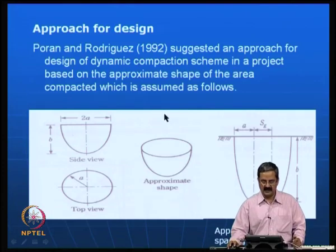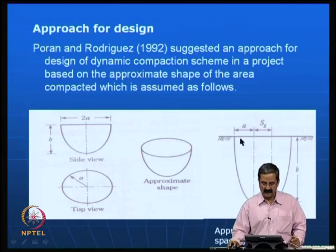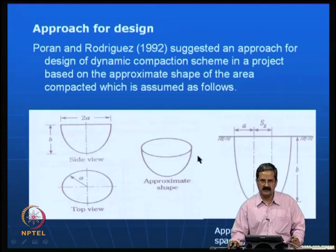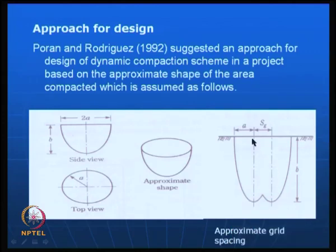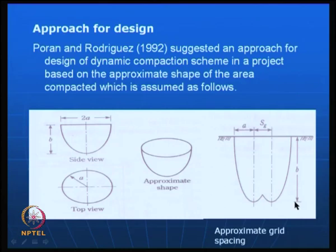The design is very important in this process, though it is based on a simple principle: you compact the soil and it densifies a zone whose approximate shape depends on the energy input. This is illustrated in both a sectional view and a top view. The spacing S_g is the grid spacing, and parameters a and b are important: b is the depth of soil to be densified, and a is the diameter of the tamper's cross-section.